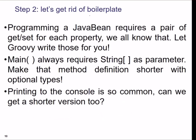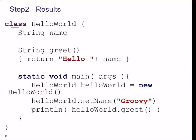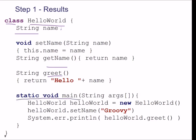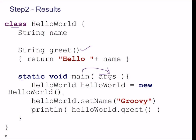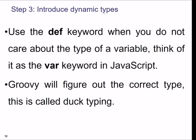The second step is to get rid of the boilerplate. Programming a Java bean requires a pair of get and set for each property — getter and setter functions — and Groovy can write those for you. Also, main would require string always as a parameter; we can make that method definition shorter with optional types. Printing to the console is quite common — can we have a shorter version? The result: class, string name, greet function, then static void main args — see the huge difference — and we just say set name Groovy, print line Hello World dot greet.